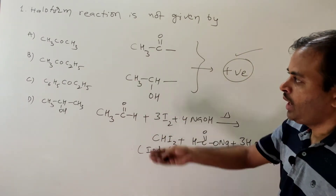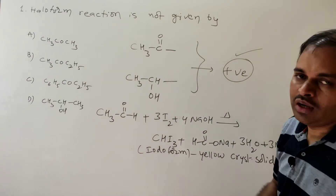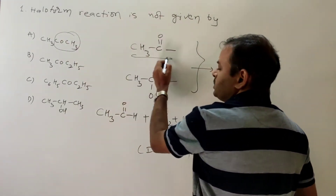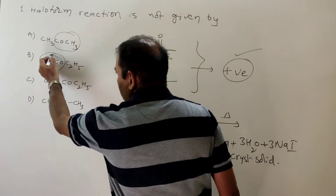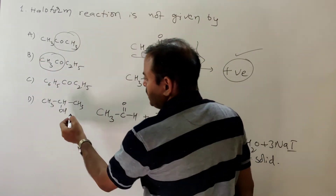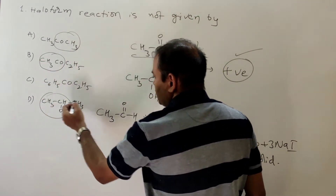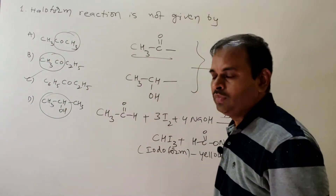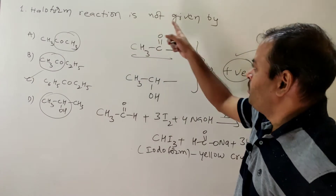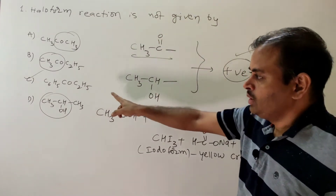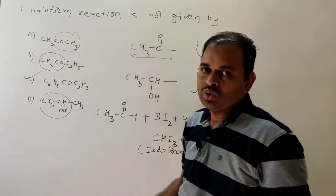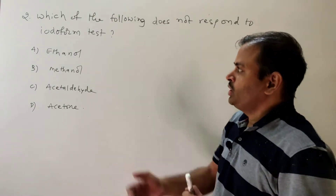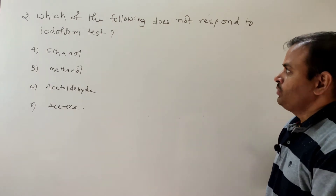Checking the options: this compound has the CH3CO group, the next also has CH3CO, and another has CH3CHOH. So the answer is C — haloform reaction is not given by C6H5 compound, which lacks the required CH3CO or CH3CHOH group. That concludes the first question.